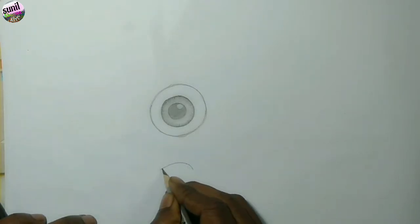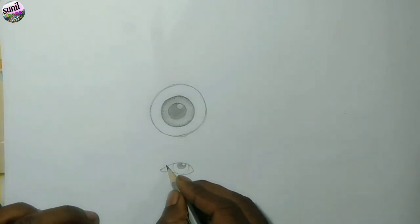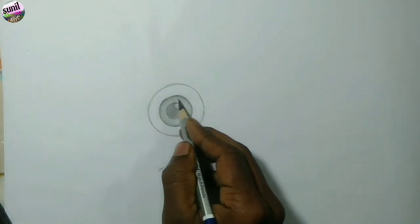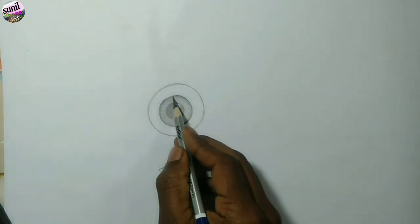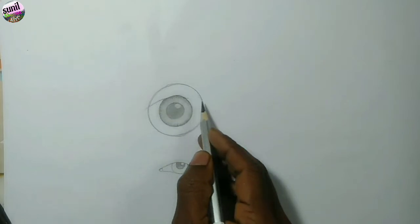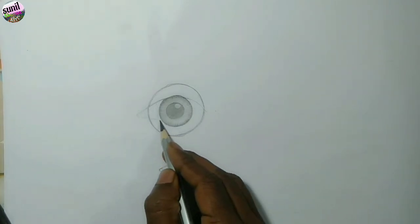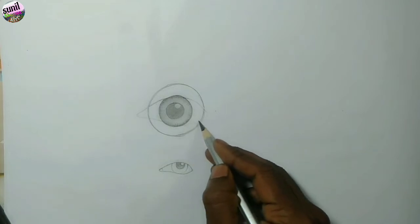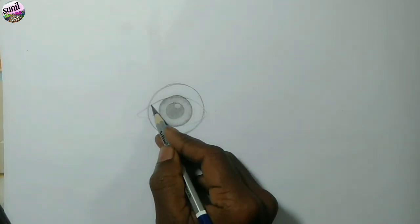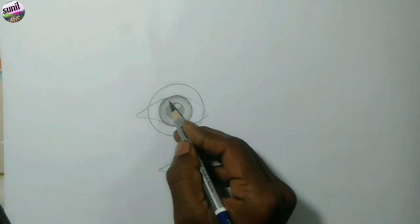We will talk about the structure of the eye, how will we keep it open or how much it will be open. So now we have this part here. How do we make this structure? We will draw to the left, we have to keep it open.